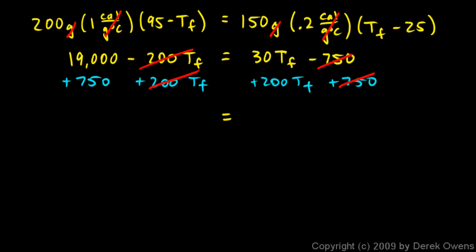On the left I have 19,000 plus 750, which is 19,750. On the right side I have 30 Tf plus 200 Tf, so 230 Tf. When I divide each side by 230, I get Tf equals 85.9 degrees Celsius.